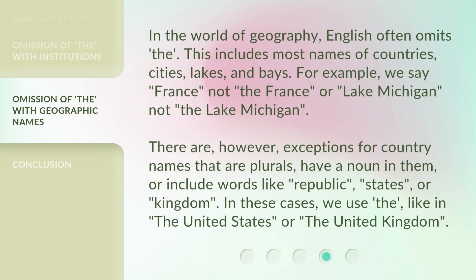In the world of geography, English often omits "the." This includes most names of countries, cities, lakes, and bays. For example, we say "France," not "the France," or "Lake Michigan," not "the Lake Michigan." There are, however, exceptions for country names that are plurals, have a noun in them, or include words like republic, states, or kingdom. In these cases, we use "the," like in "the United States" or "the United Kingdom."